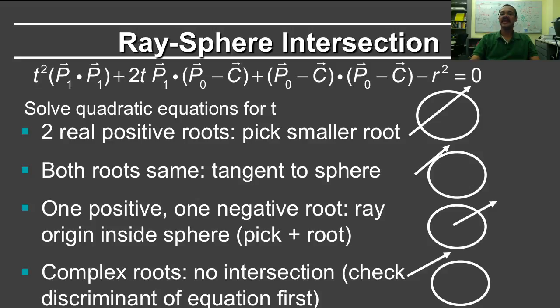On the other hand, if you have two real positive roots, then the ray intersects the sphere twice, and this is in fact the canonical case, you pick the smaller positive root. If both roots are the same, the ray is tangent to the sphere. And of course, in all ray tracing, there is an interesting question of how do you handle these kinds of numerical degenerate cases like tangents.